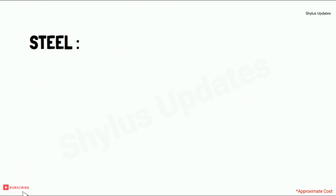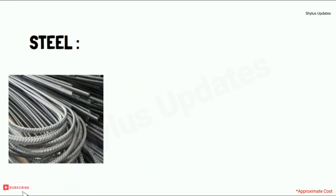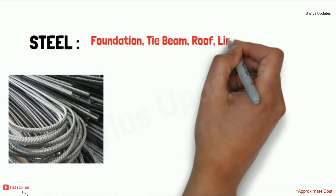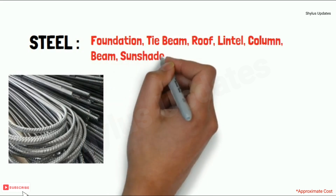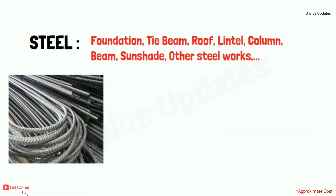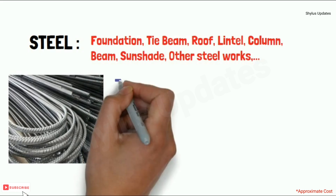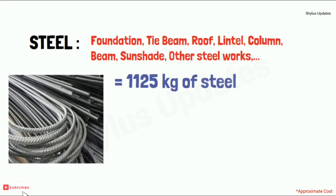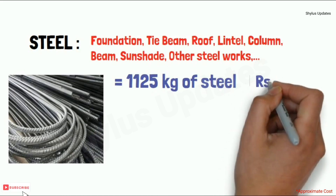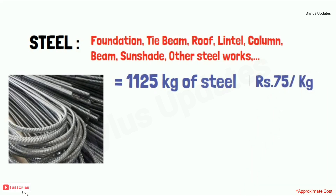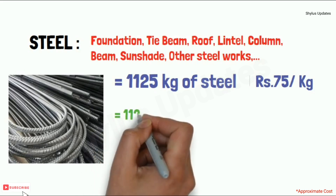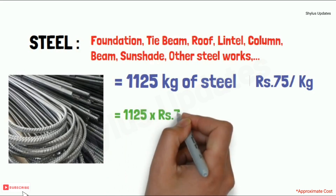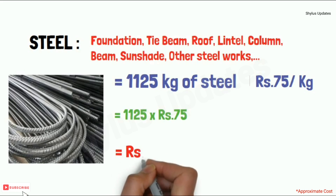Steel is used in foundation, tie beam, roof, lintel, column, beam, sunshade, and other steel works. For a 250 square feet house, 1,125 kilograms of steel are required. The current market rate of steel is rupees 75 per kilogram. Some other brands are available from rupees 68 to 70 — kindly check in your nearby area. When you multiply 1,125 kg into rupees 75, you get rupees 84,375.